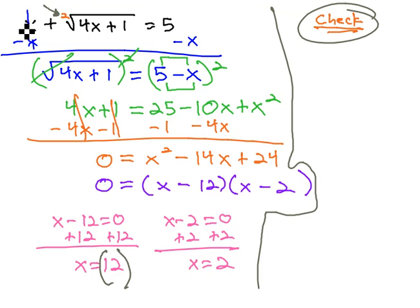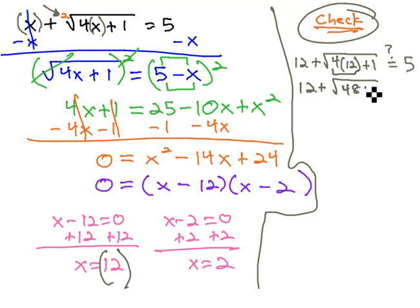Let's check the 12 first by plugging it in for both the x's. 12 plus the square root of 4x, or 4 times 12, plus 1, hopefully that equals 5. Well, 4 times 12 gives us 12 plus the square root of 48, plus 1, hopefully that equals 5.